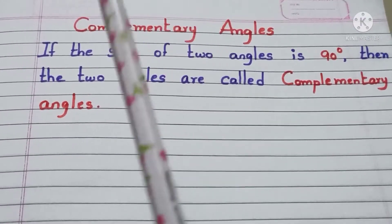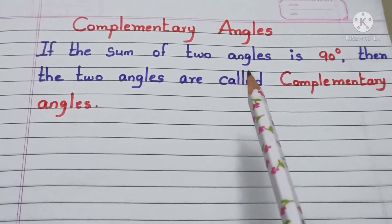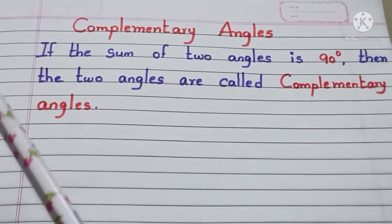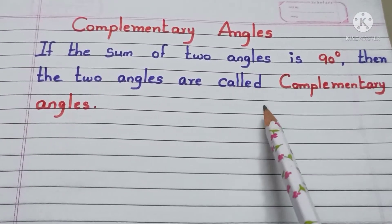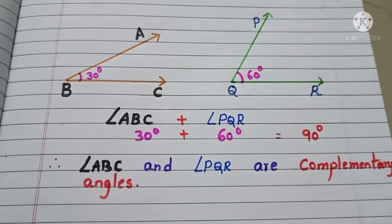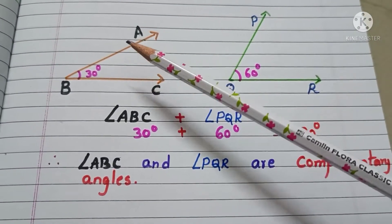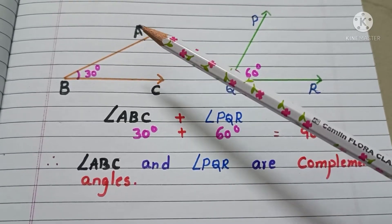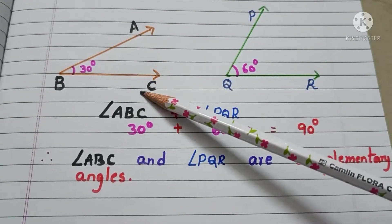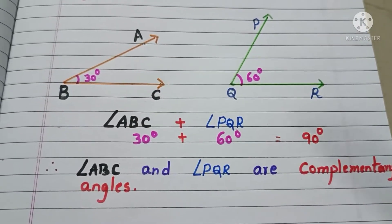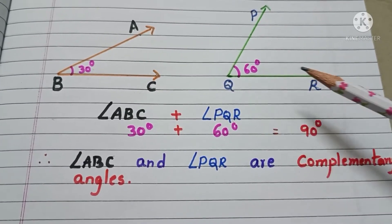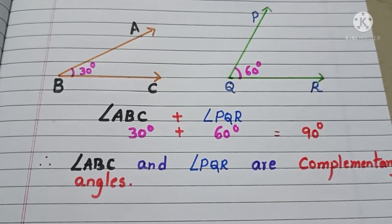First, we see the definition. If the sum of two angles is 90 degrees, then the two angles are called complementary angles. Let us see with the example. Observe the two figures. Here, in the first figure, the angle ABC is 30 degrees and in the second figure, the angle PQR is 60 degrees.